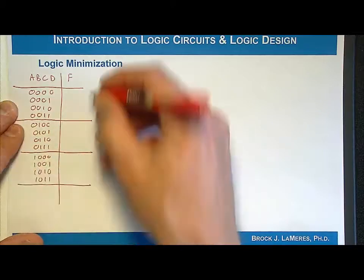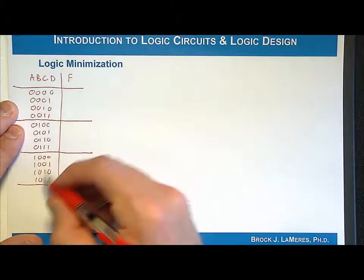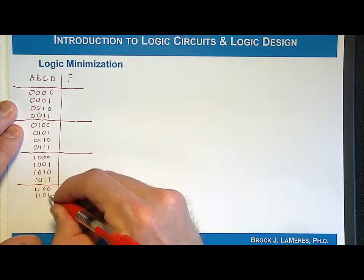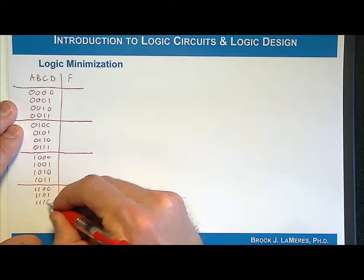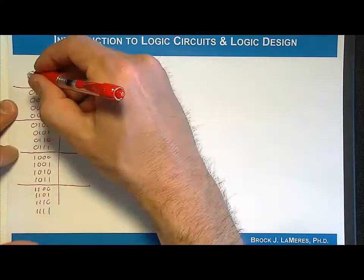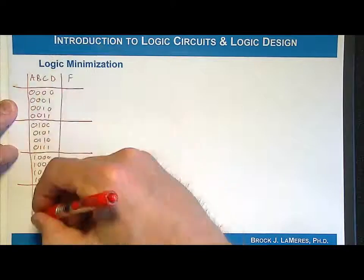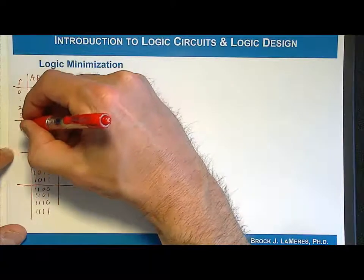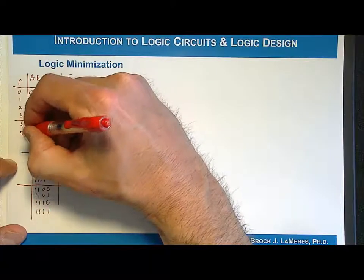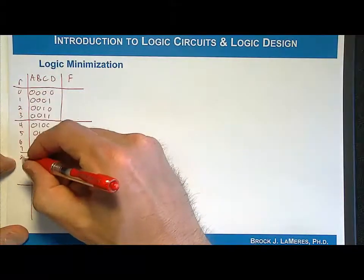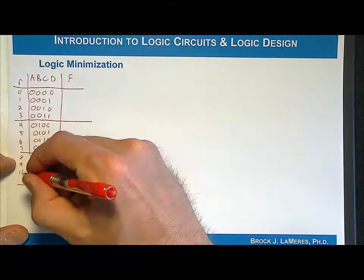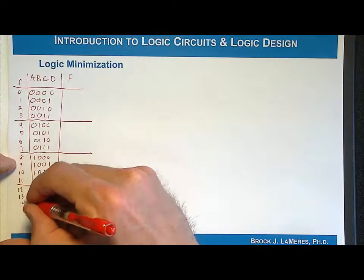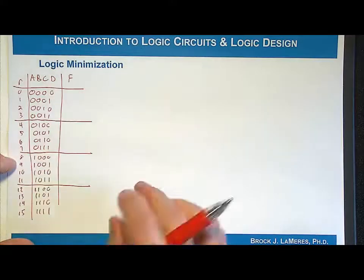I always put dividers every four rows to keep it straight. The 16 input codes correspond to rows 0 through 15. Let's put some output values in: 0, 0, 0, 0, 1, 1, 1, 0, 0, 0, 0, 0, 0, 1, 1, 1, 0. These represent just some circuit with this behavior. Now let's draw the K-map.